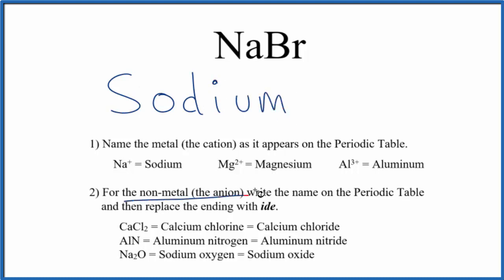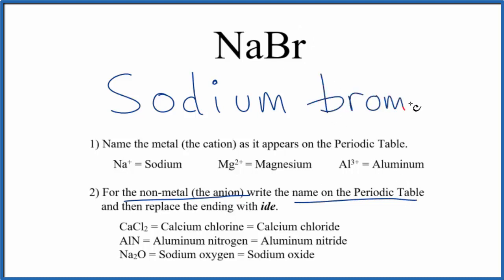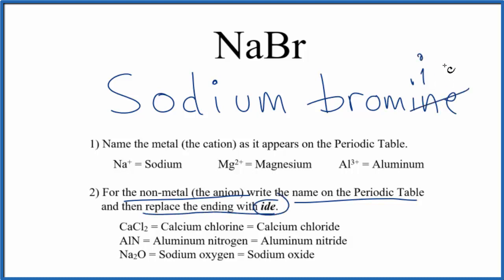Then, for the nonmetal — that's the Br — we write the name as it appears on the periodic table, so bromine. But we replace the ending with -ide. So the I-N-E, change that to I-D-E.